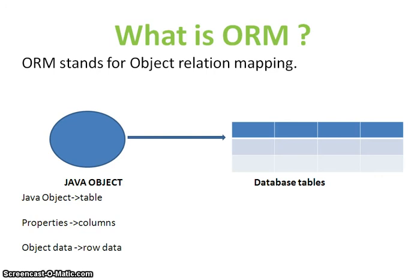What ORM does is it maps the Java object with a database table, properties with columns, and object data with row data. Instead of mapping manually — like we do in JDBC — ORM handles that automatically. Each row in a database table is essentially an object's data.